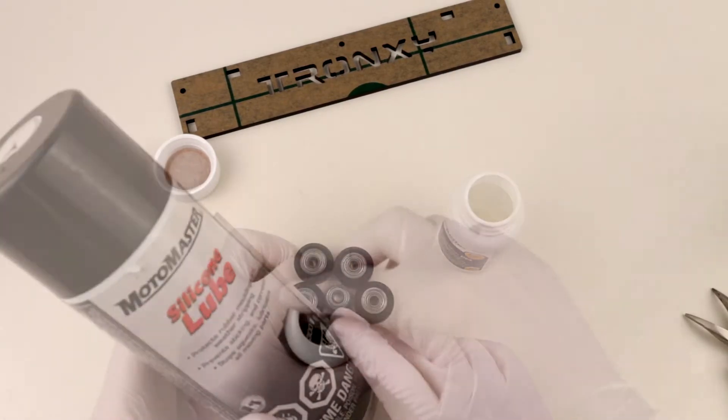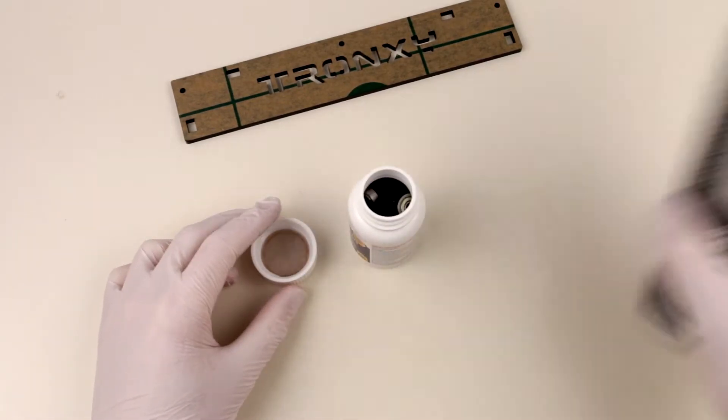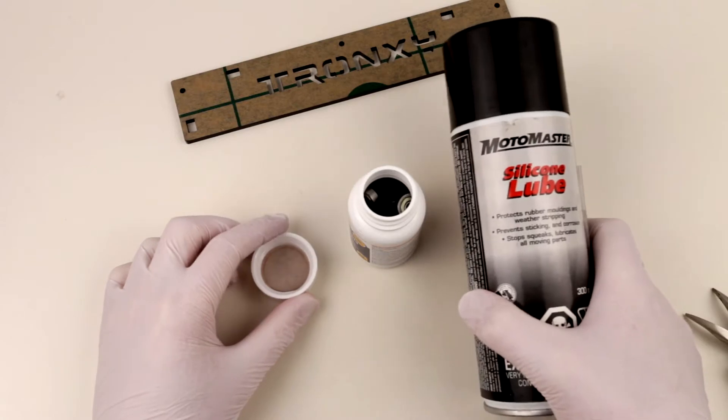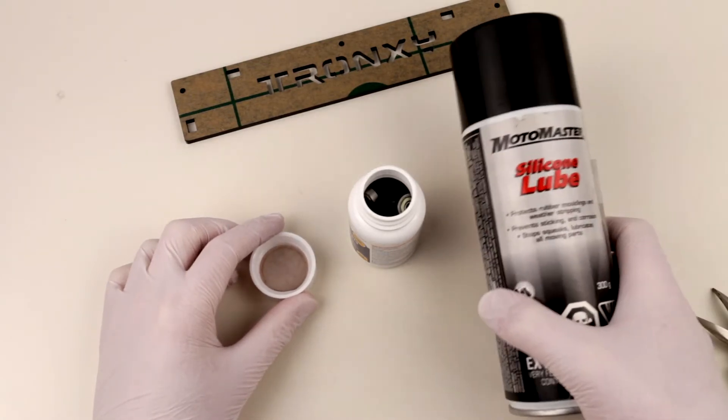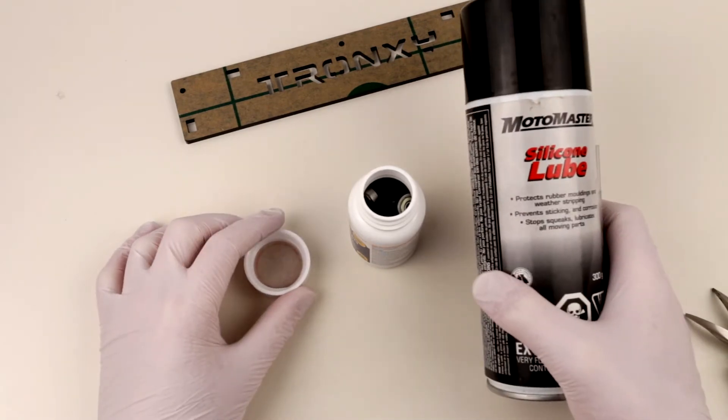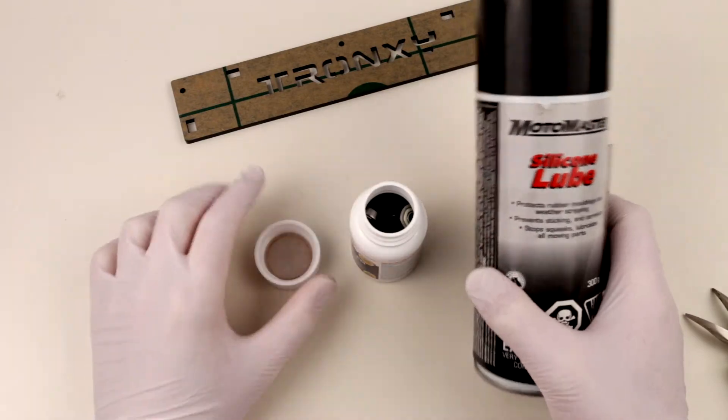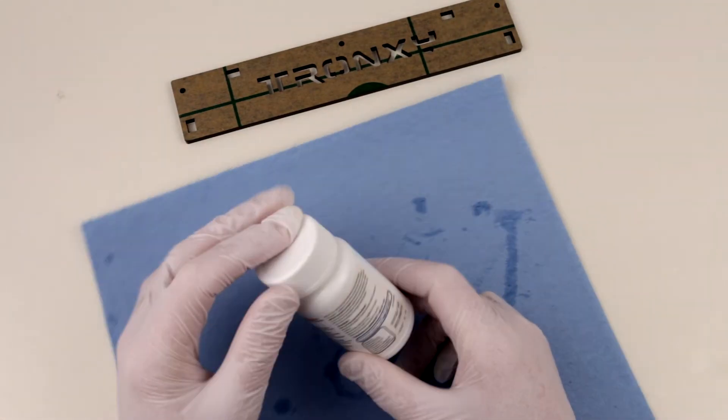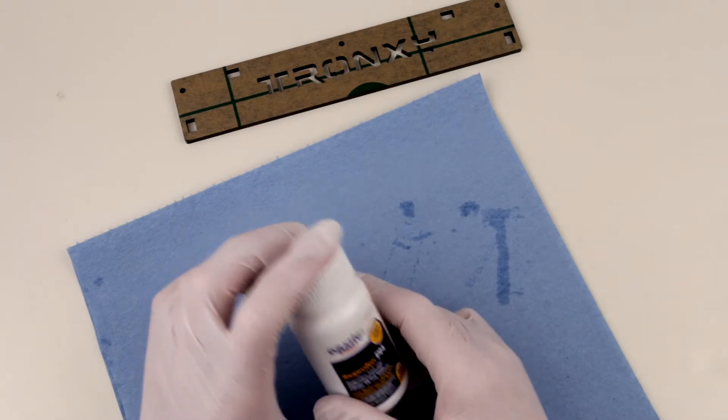You can pretty much use either one. I'm going to spray this Motomaster lube outside in the garage or outside just to not inhale this stuff, put it into this container, close it, and leave it for a while to penetrate and lubricate. After some time of lubricating with that Motomaster silicone lubricant, I have this jar.